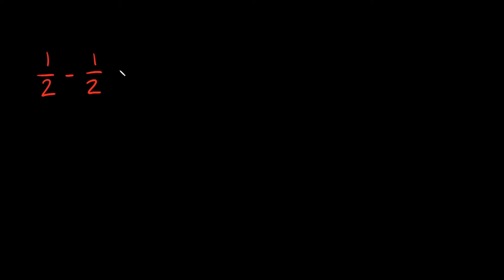As you can tell, adding fractions — whether they're proper or improper — is pretty simple when they have the same denominator. Now let's get into subtracting. I'm going to redo the first example but this time subtract. So if I had 1 half minus 1 half, we have the same denominator so we keep it. We do 1 minus 1, and that is 0. Can we reduce this? Sure, because 0 divided by 2 is just 0.